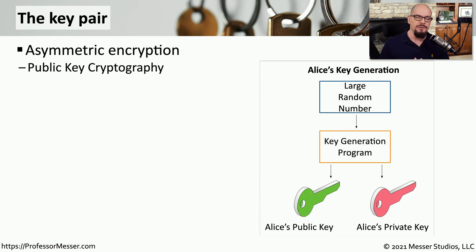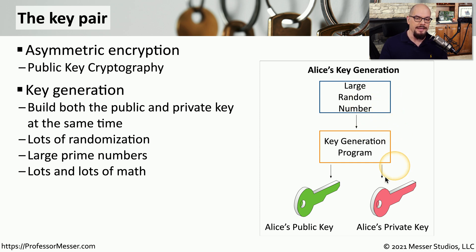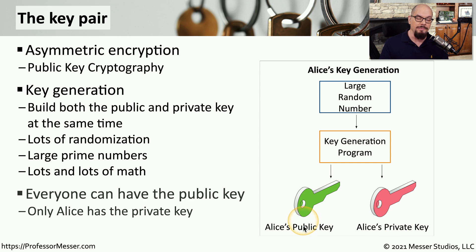To better understand the relationship between the public key and private key, let's go back to when we originally create this key pair. We build both keys at the same time: there is a large random number input into a key generation program, and the output creates two keys — the public key and the private key. This key generation program uses large random numbers and prime numbers as input, runs them through the generation process, and outputs two separate keys. Of those two keys, we choose one to be the public key and one to be the private key, share the public key with everybody, and keep the private key private.